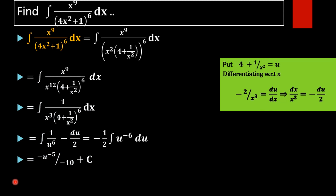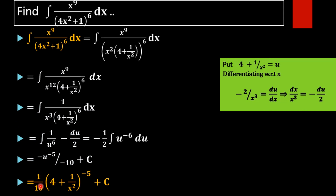So the result is u raised to minus 5 divided by 10 plus c. Substituting back, u equals 4 plus 1 by x squared. The two negatives cancel, giving us 1 by 10 into (4 plus 1 by x squared) whole raised to minus 5 plus c. This is the required result.